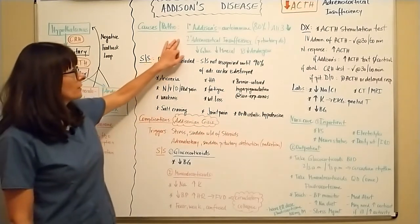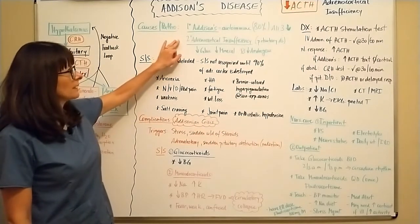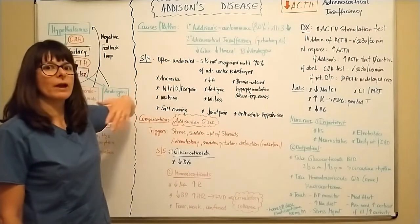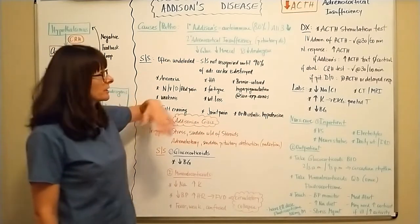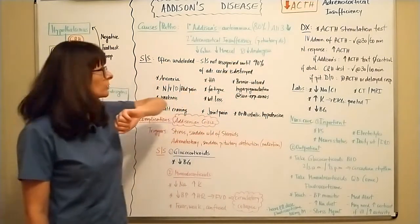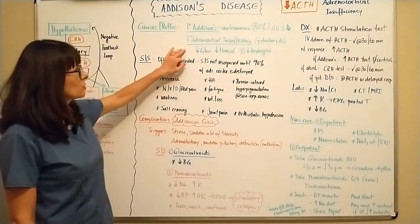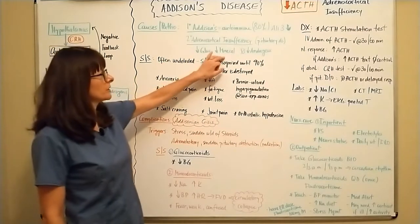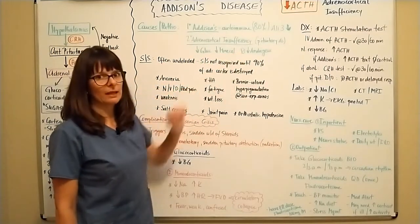If it's secondary adrenocortical insufficiency, that basically means it comes from somewhere else besides the adrenal cortex. And it's usually related to pituitary disorders. And what we'll see there is decreased glucocorticoids, mineralocorticoids, but no decrease in androgens.